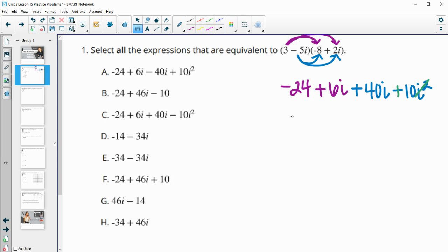And then we can combine some of these. So negative 24 and positive 10 is negative 14. And 6i and 40i is plus 46i. So this would be our simplified version of this. And then we'll take a look at some of these others to see if any others are equivalent.